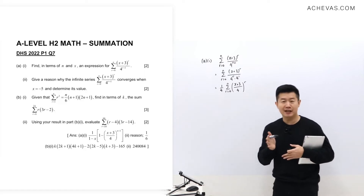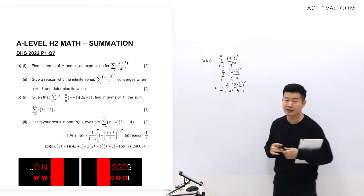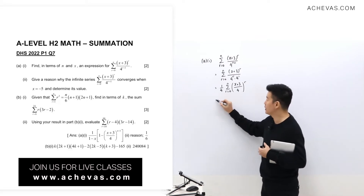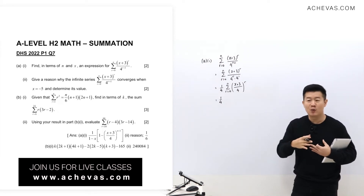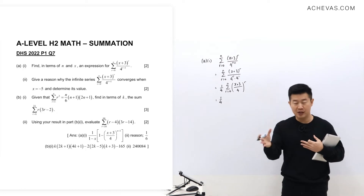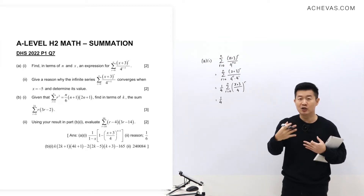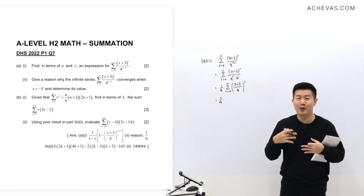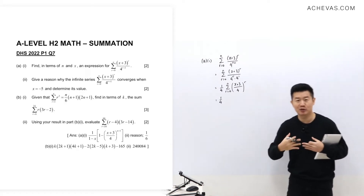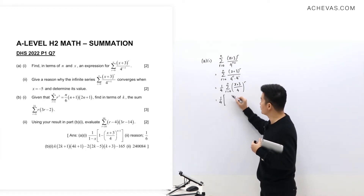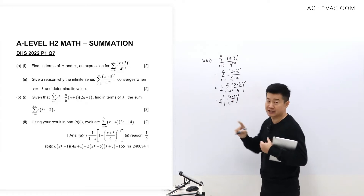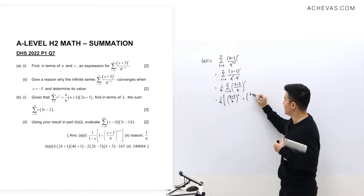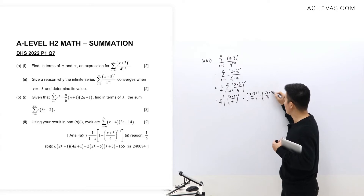Just in case it's difficult to recognize this as a geometric progression, we can expand the sigma notation into its term-by-term format. Once we do that, we can deduce any GP or pattern to help with the summation. The first term, when r=0, is (x+3)/4 to the power of 0, which is just 1. The next term is (x+3)/4 to the power of 1, then (x+3)/4 to the power of 2.